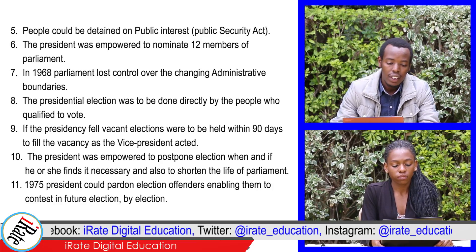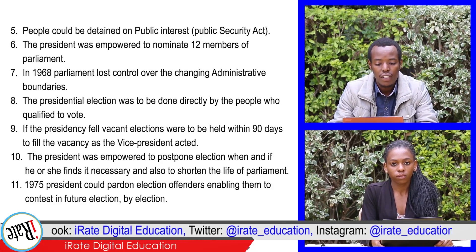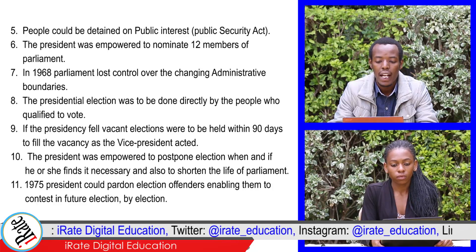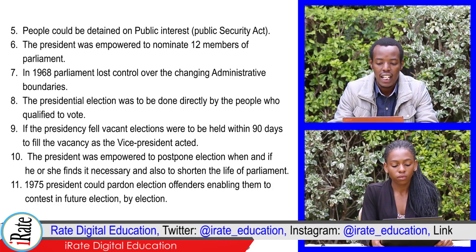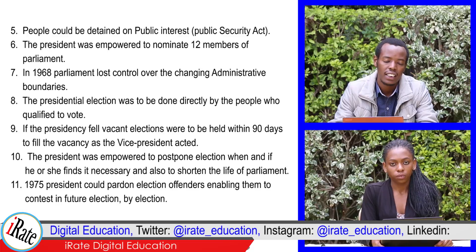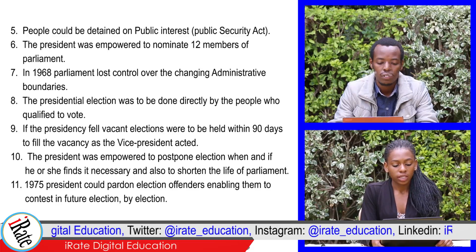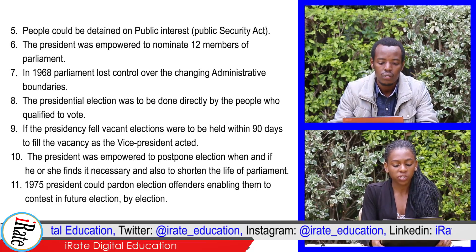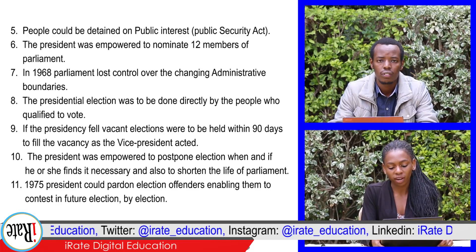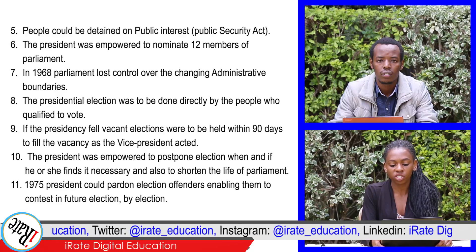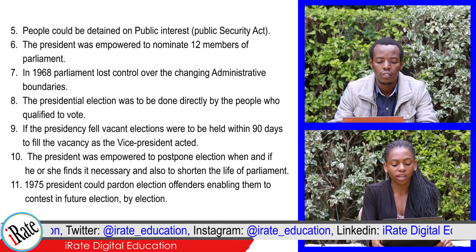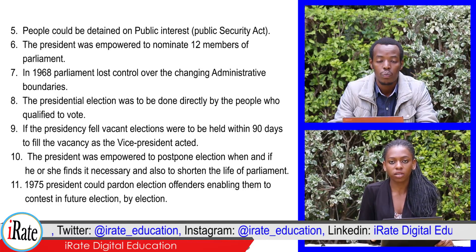9. If the presidency fell vacant, elections were to be held within 90 days to fill the vacancy as the Vice President acted. 10. The President was empowered to postpone elections when and if he or she finds it necessary, and also to shorten the life of Parliament.